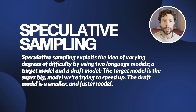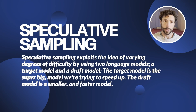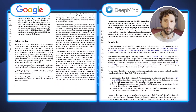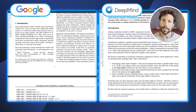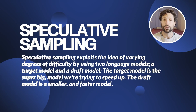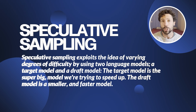Speculative sampling is a decoding strategy recently discovered, independently by teams at Google Research and DeepMind, that yields 2-3x speedups by generating multiple tokens per model pass, and most importantly, without changes to the final output. The idea is to redistribute the model calls needed to generate a sequence between two models working in tandem instead of just one.